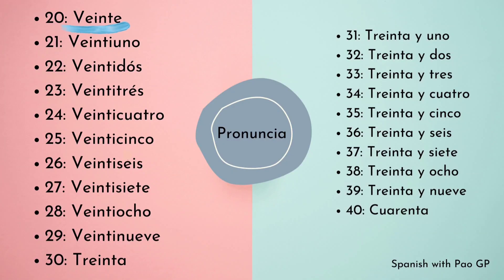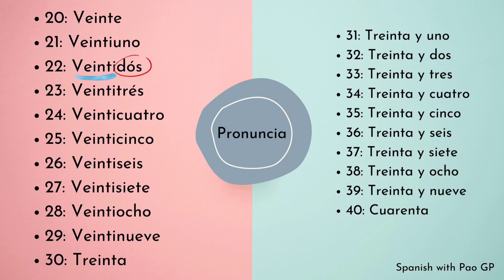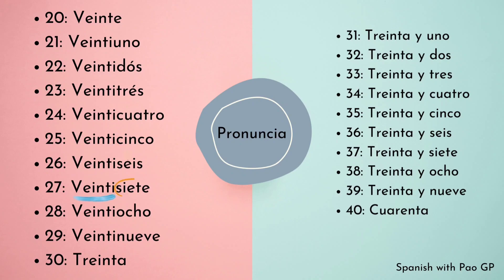El veinte, cuando lo unimos con otro número, la e cambia a i. Por ejemplo: veintiuno, veintidós, veintitrés, veinticuatro, veinticinco, veintiséis, veintisiete, veintiocho y veintinueve.